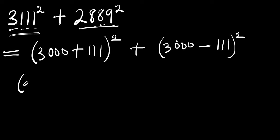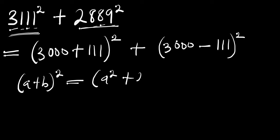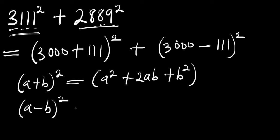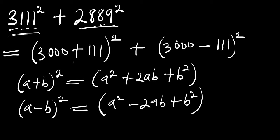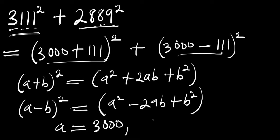Now we can consider these identities: if you have a plus b power 2, this equals a squared plus 2ab plus b squared, and if you have a minus b power 2, this equals a squared minus 2ab plus b squared. From what we have here, our a equals 3000 and b equals 111.